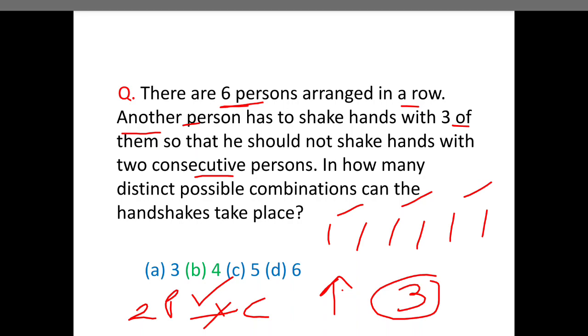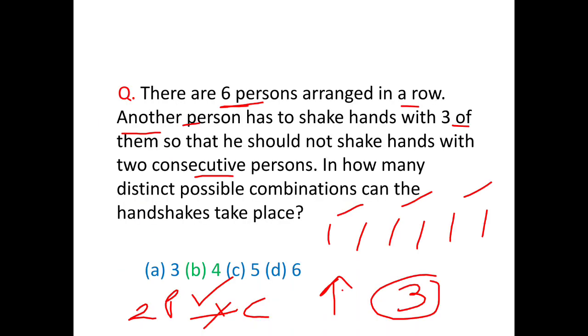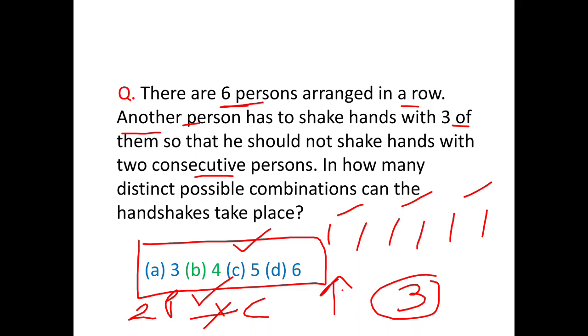Now before we see the answer, I will tell you one more thing: if you see the answer options, A is 3, B is 4, C is 5, and D is 6. That means the combinations possible are small so you can do it mentally also, rather than wasting time on formula and all.